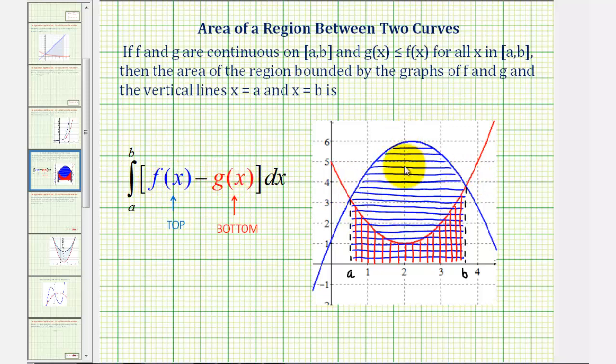So we're finding the area below the top function and above the x axis and then we're subtracting the area below the bottom function and above the x axis, leaving us with the area between the two functions where we start integrating at x equals a and stop integrating at x equals b.